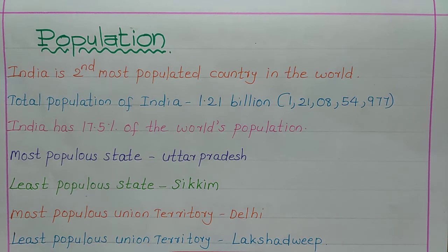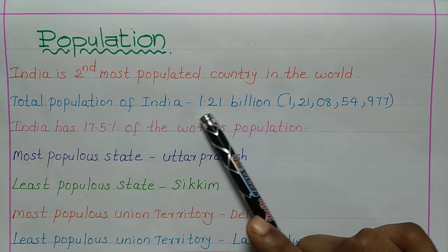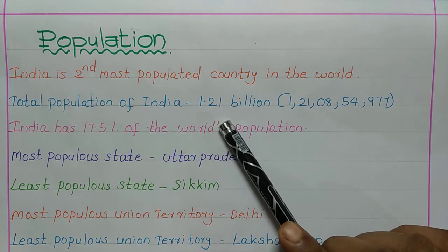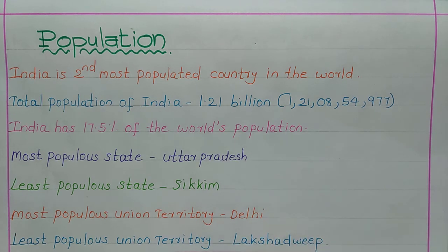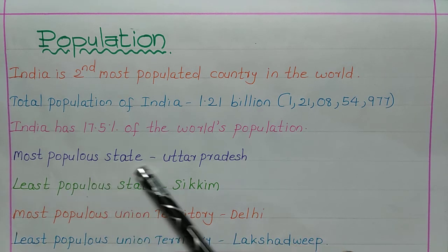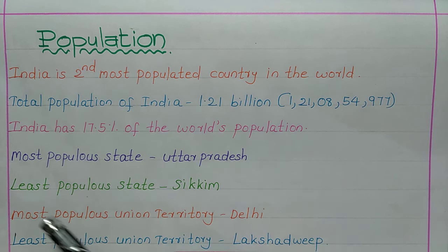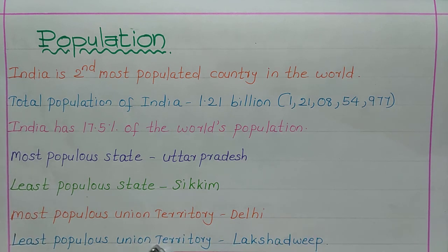Now let's see the population of India. India is the second most populated country in the world, with a total population of 1.21 billion. China is the most populated country and India holds the second position. India has 17.5% of the world's population. The most populous state is Uttar Pradesh and the least populous state is Sikkim. The most populous Union Territory is Delhi and the least populous Union Territory is Lakshadweep.